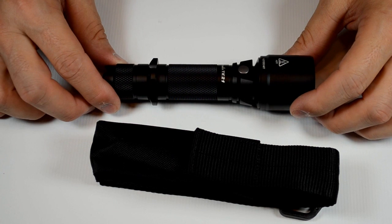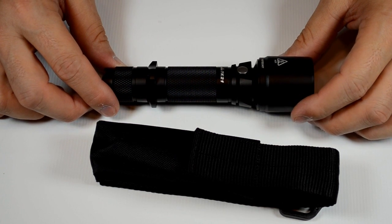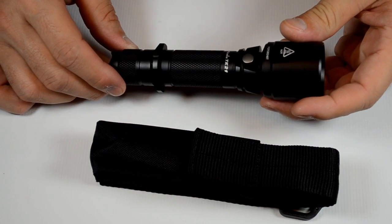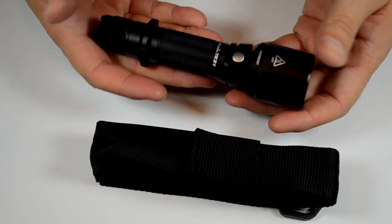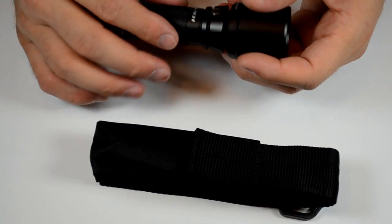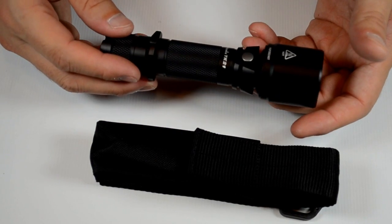Another offering from Phoenix, this is the Phoenix TK21, one of their new tactical offerings. As you can see, it's got the tactical grip, forward clicky, nice knurling, and the HA3 coating.